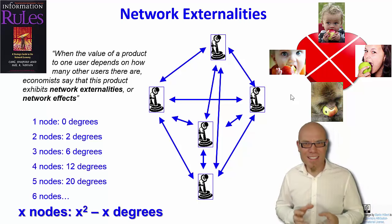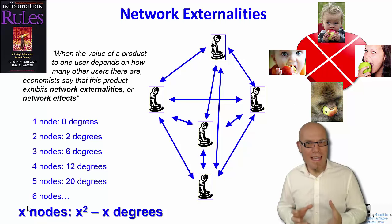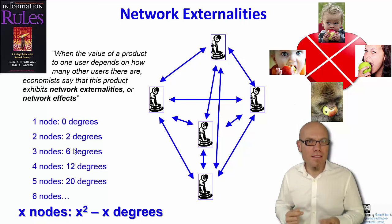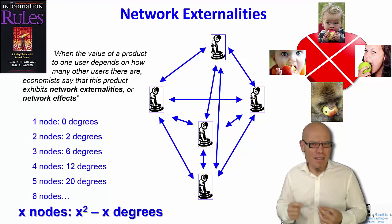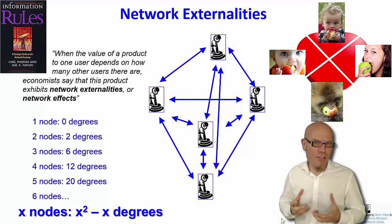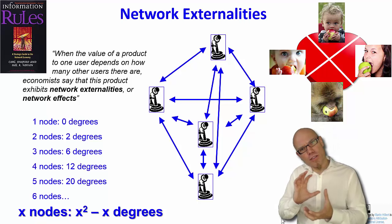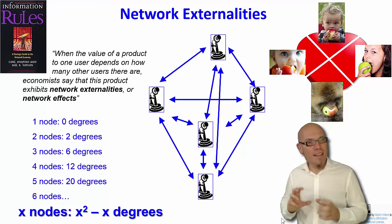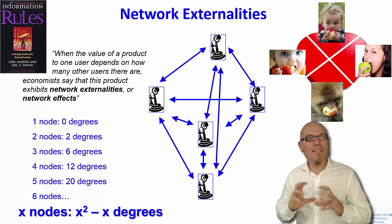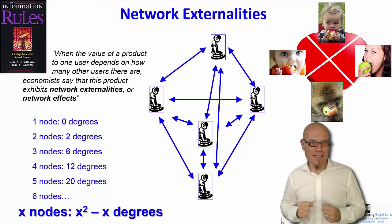The formal formula goes like this: you have the number of nodes x, and the number of possible connections — the number of possible phone calls — grows with x squared minus x. The minus x is because it doesn't create a lot of value to call yourself. So it grows in an exponential logic, and this creates these impressive positive network externalities.